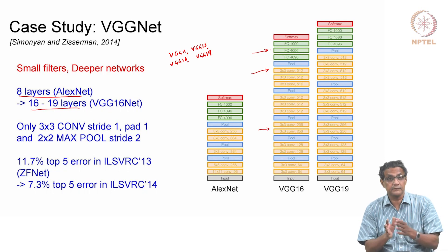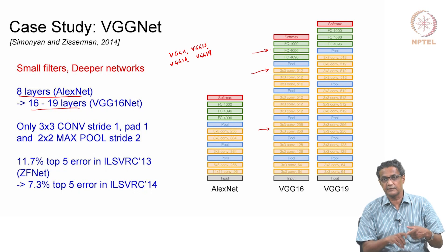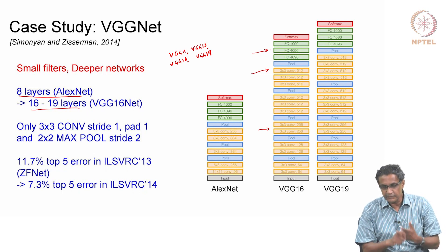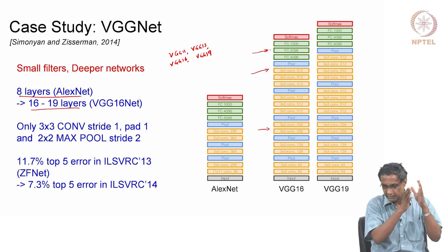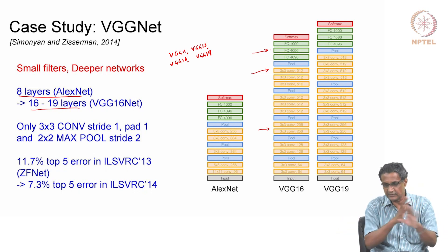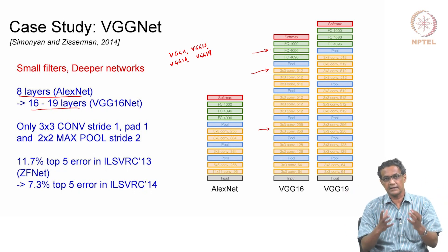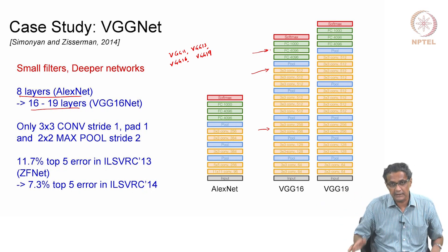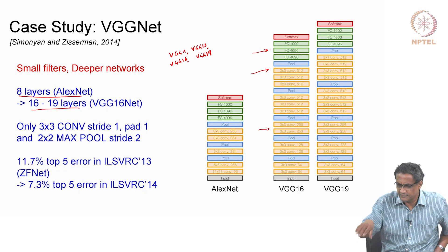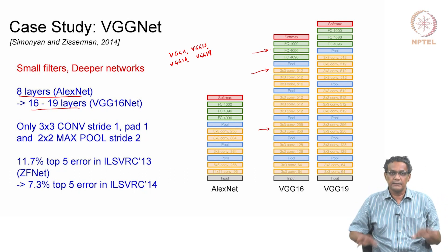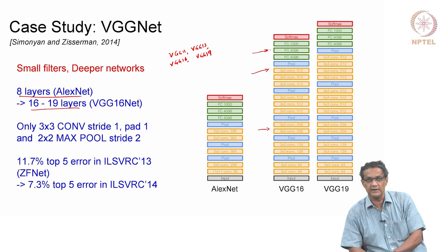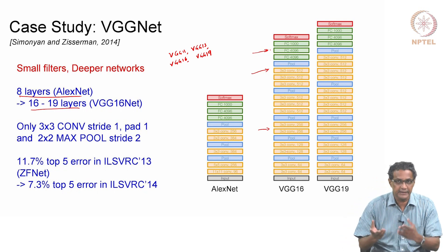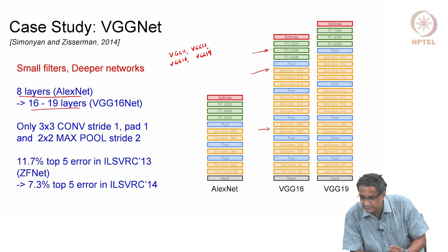These networks were primarily built for classification, detection, and segmentation challenges. But it turned out that after training, even pre-trained networks — where you use weights trained by the original authors without retraining — are useful. If you push an image through, you get feature maps at all levels, and some of those feature maps are useful for certain other applications.